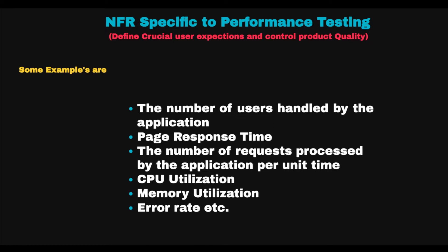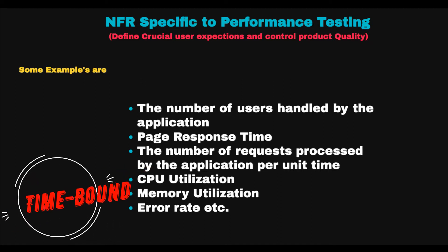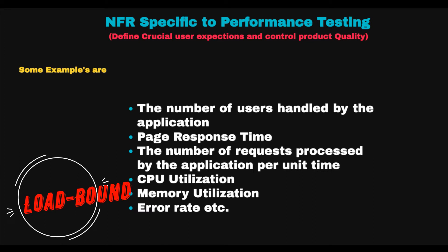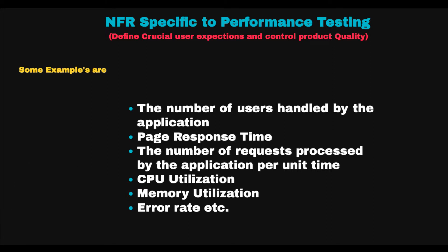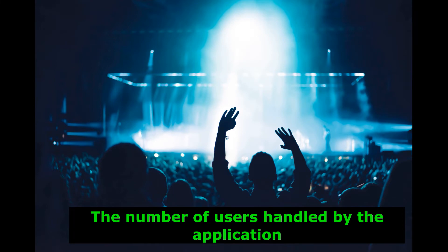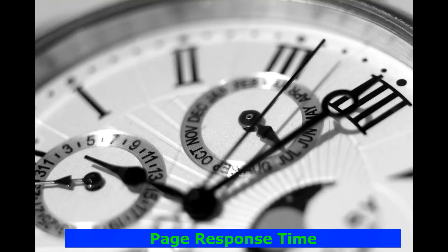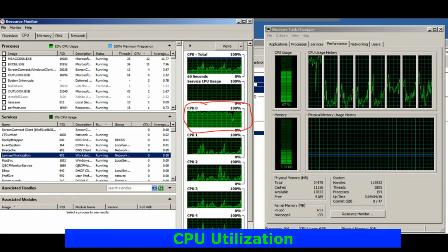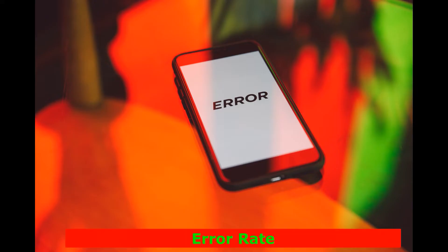In non-functional requirements, some goals are time-bound, like the response time of a page, requests per second, and resource utilization. Whereas some goals are load-bound, like real-world user load and throughput. Simple examples of non-functional requirements include: number of users handled by the application, page response time, number of requests processed per unit time, CPU utilization, memory utilization, and error rate.